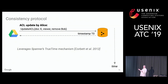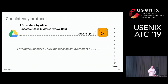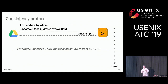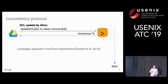Zanzibar solves this problem with a consistency protocol executed in cooperation with its client services — all Google services, so it's not an adversarial situation. The first step is that the document service sends a request to Zanzibar to remove Bob as a viewer of document X. The key is to exploit the linearizable commit timestamps provided by the underlying database system, Spanner. This ACL change receives timestamp T0, which Zanzibar returns to the client.